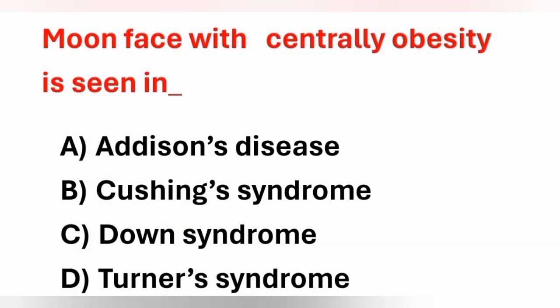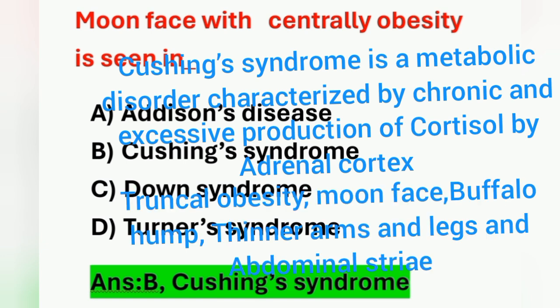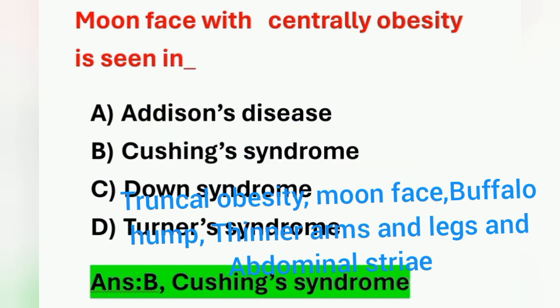Next question: moon face with central obesity is seen in — option A: Addison's disease, option B: Cushing syndrome, option C: Down syndrome, option D: Turner syndrome. Option B, Cushing syndrome, is correct. Cushing syndrome is a metabolic disorder characterized by hypersecretion of glucocorticoids, especially cortisol, from the adrenal cortex. Clinical features include central obesity, moon face, buffalo hump, thin arms and legs, and abdominal striae.